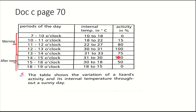When the internal temperature is below 18 degrees Celsius — you can see it's between 10 and 18, and also between 15 and 18 — the activity of the lizard is minimum. While when the internal temperature is between 30 and 31 degrees Celsius, the activity of the lizard is maximum.